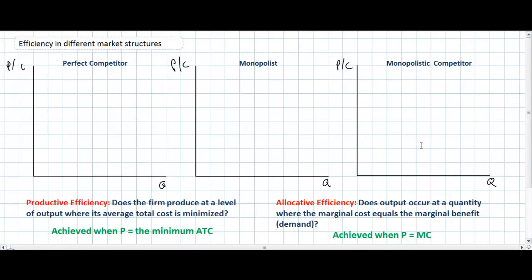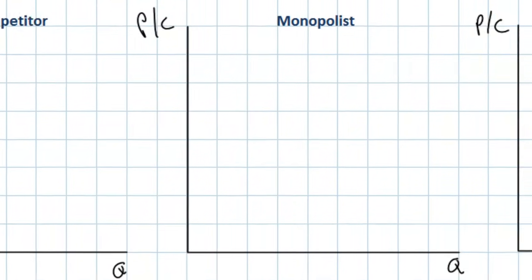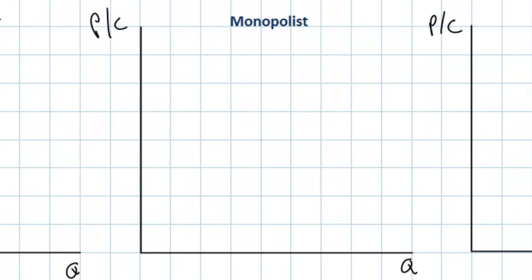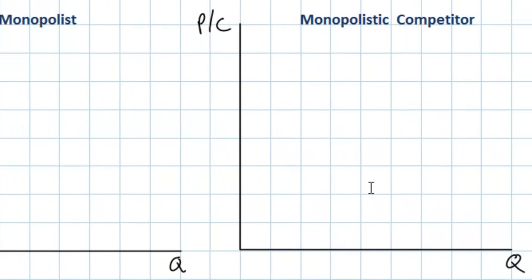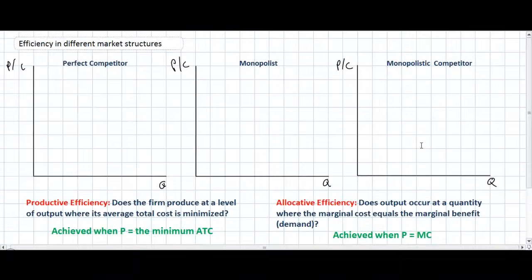In this lesson we're going to examine firms in three different market structures: the perfectly competitive firm in the graph on the left, the pure monopolist in the graph in the middle, and the monopolistic competitor in the graph on the right. Before you watch this lesson you should have watched all the video lessons in which we introduced these three market structures and the diagrams that illustrate individual competitors in each.